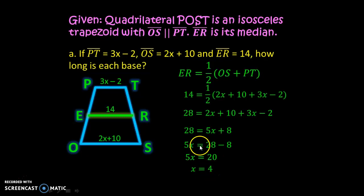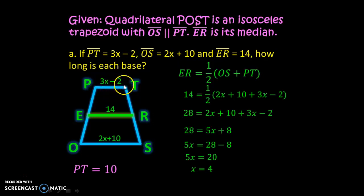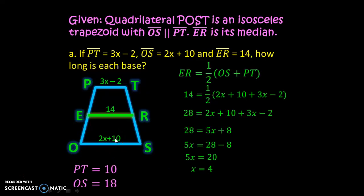By algebraic manipulation, 5x equals 28 minus 8, so 5x equals 20, and x equals 4. Since x equals 4, PT equals 3 times 4 minus 2, which is 12 minus 2, equals 10. And OS equals 2 times 4 plus 10, which is 8 plus 10, equals 18.